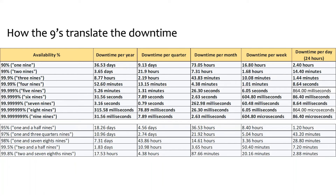Two nines — 99% availability — means the system will be down for 3 and a half days per year, approximately 15 minutes per day. Generally, conventional servers have 99% availability. Three nines — 99.9% availability — means the system will be down for almost 9 hours per year, approximately 2 minutes per day.